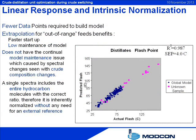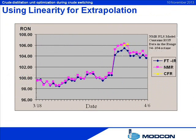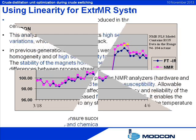The main advantage of this innovative process technology is linear spectral response across a broad range, which enables models to be extrapolated accurately. An NMR analyzer calibrated for a range of 94 through 104 octane gives accurate results also at values higher than 106.